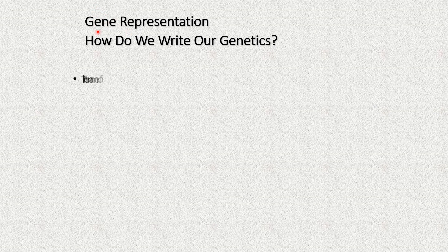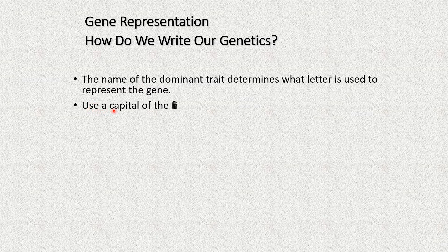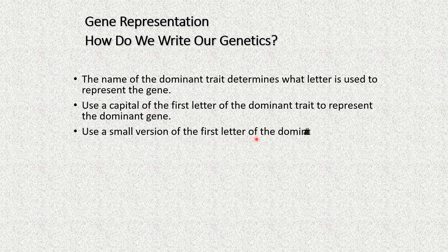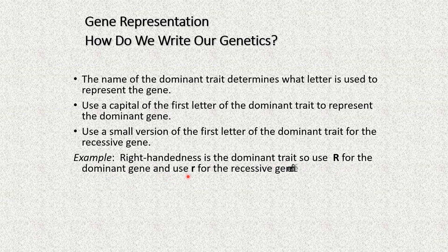Gene representation: How do we write our genetics? The name of the dominant trait determines what letter is used. Use a capital letter of the first letter of the dominant trait to represent the dominant gene, and a lowercase version for the recessive gene. Example: right-handedness is the dominant trait, so use R for the dominant gene and r for the recessive gene for left-handedness.